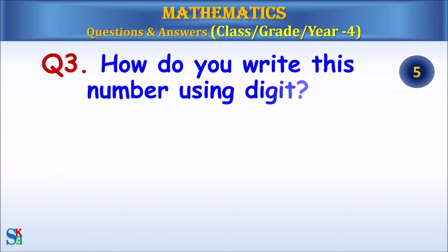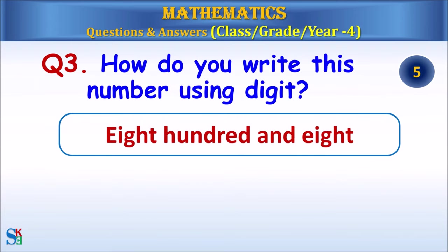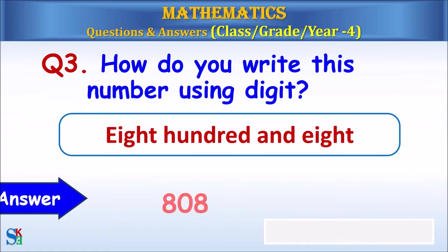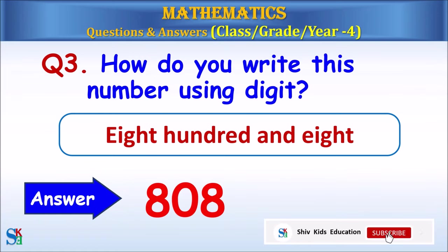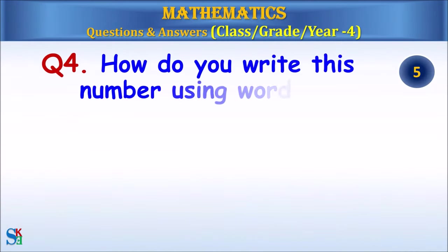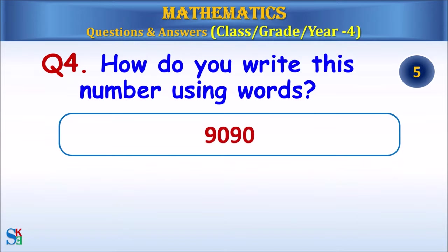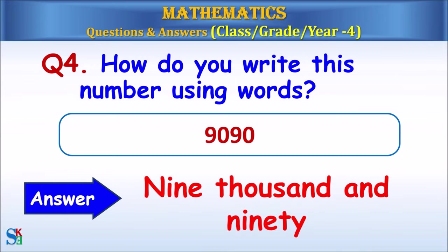Question 3: How do you write this number using digits? The answer is 808, eight hundred and eight. Question 4: How do you write this number using words? The answer is nine thousand and ninety.